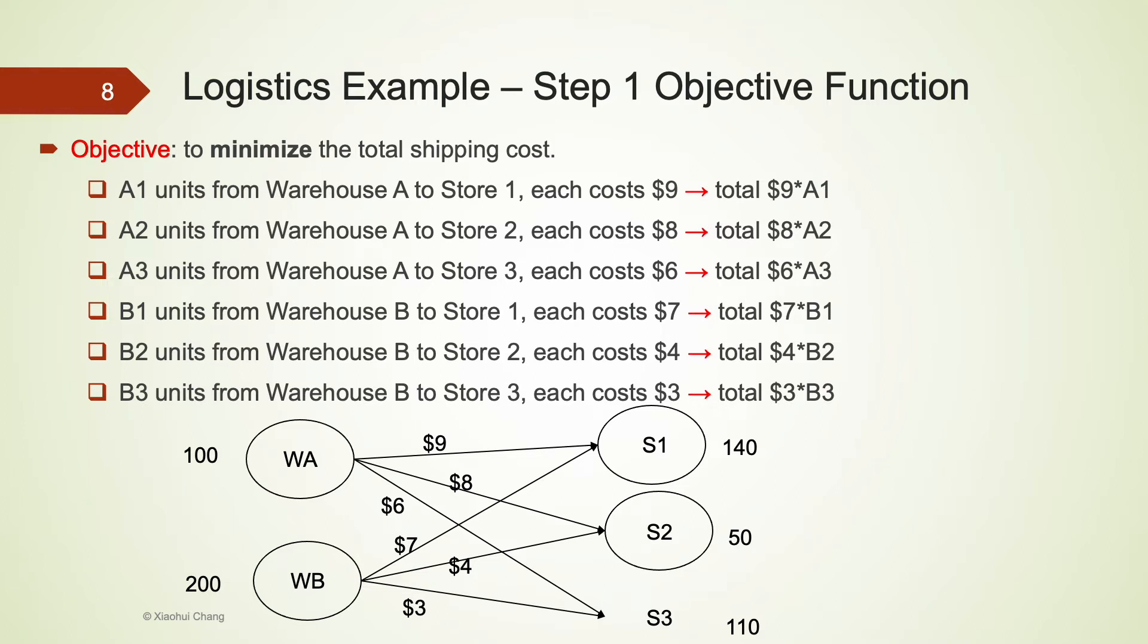The next part is to state the objective function. The manager's objective is to minimize the total shipping cost. To calculate the total shipping cost, we would have to obtain both the per unit shipping cost and the quantity shipped, and then multiply them together. The per unit shipping costs are given in both the table and the graph. We have just defined the quantity shipped using A1, A2, and so on and so forth. All we need to do is to multiply them together and sum up all the products.